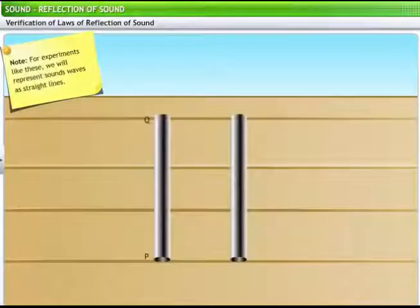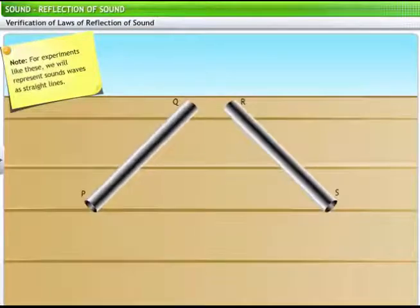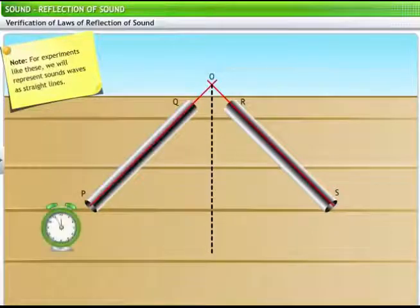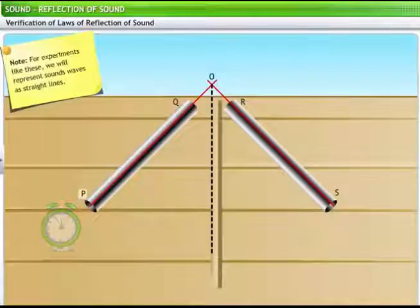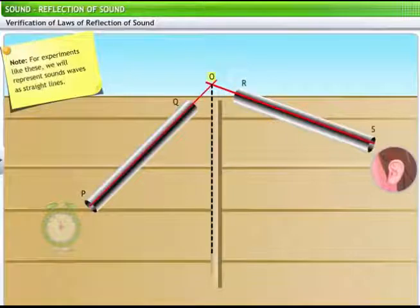To set up the experiment, we take two identical hollow pipes, PQ and RS, each about 2 feet long. We place these pipes on the surface of a table near a wall so that their axes intersect at point O on the wall as shown. Then, we keep a clock near the end P of the pipe. Finally, keep a cardboard vertically in between the pipes so that the sound of the clock at P cannot be heard directly at the end S of the pipe RS. Now, we try to hear the sound of the pipe RS. The angle of the pipe RS can be changed by tilting it in a horizontal plane about the point O.